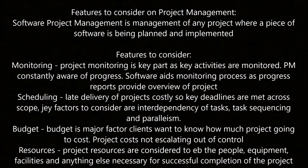Features to consider in project management. Software project management is the management of any project where a piece of software is being planned and implemented. Features to consider include monitoring, where key activities are monitored and the project manager is constantly aware of progress, with software aiding the monitoring process through progress reports. Scheduling: late delivery of projects misses key deadlines; key factors to consider are the interdependency of tasks, simultaneous tasks, and parallelism. Budget: the budget is a major factor — clients want to know how much a project will cost and that costs are not escalating out of control. Resources: project resources include the people, equipment, facilities, and anything else necessary for the successful completion of the project.